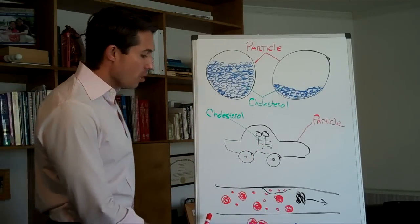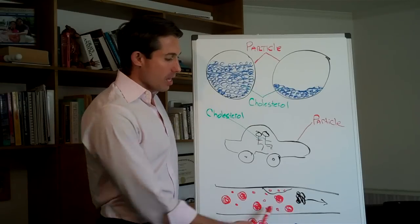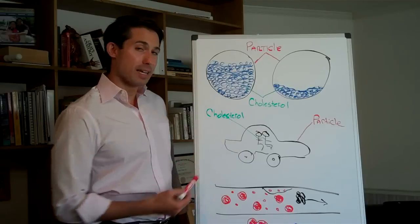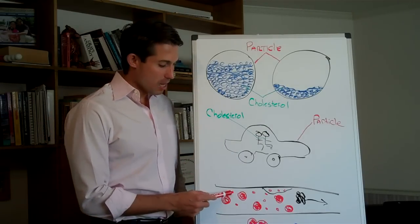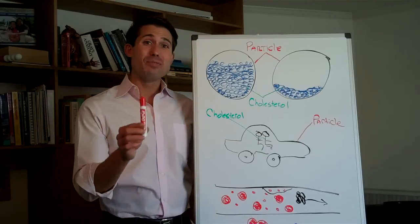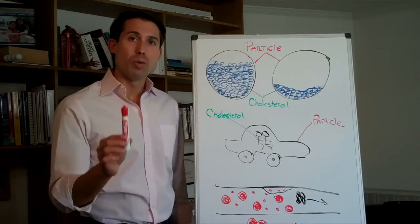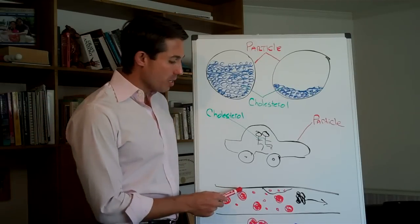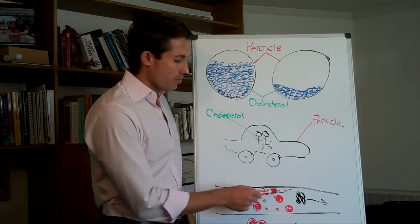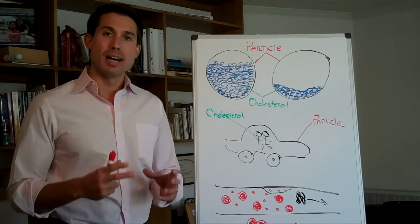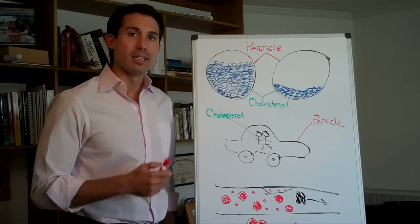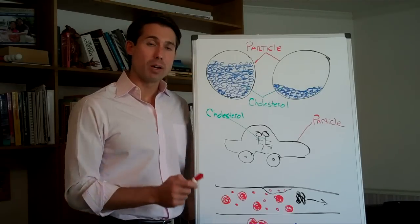Hopefully that makes sense. So here we are, we have an artery and this is where the particle size and number comes in place. As you can see, you have very large particles and very small particles. It's the very small particles that wreak the most havoc and that's because it can get into the lumen of the side of the cell or the artery and there it can become oxidized. And when it becomes oxidized, it can cause plaquing.